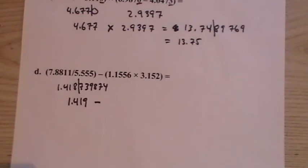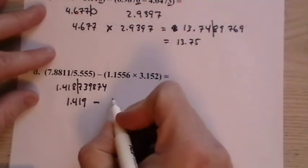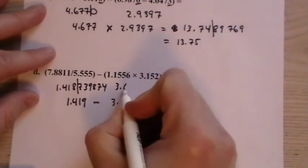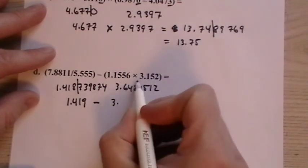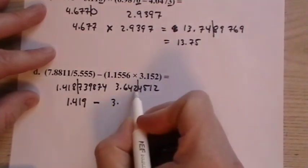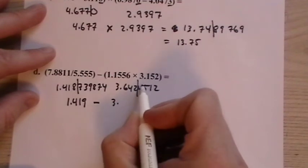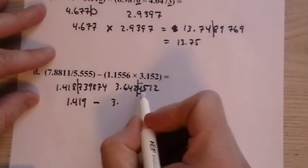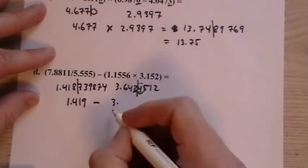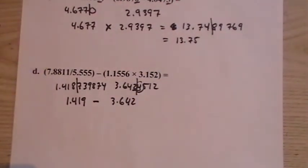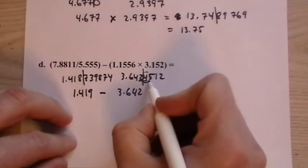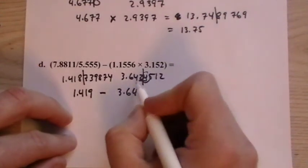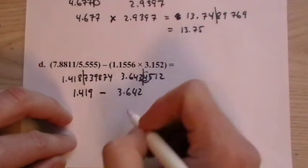Minus. And then we have on the other side, 1.1556 times 3.152. And we have 3.6424512. 5 significant figures, 4. So we have to stop here. After the last digit, the one that we aren't keeping is less than 5. So we don't touch this number. 3.642. So check the rules on rounding. But wherever we're going to cut off, we look at the next number. If it's 5 or greater, we round up 1. If it's 4 or less, we leave it alone.